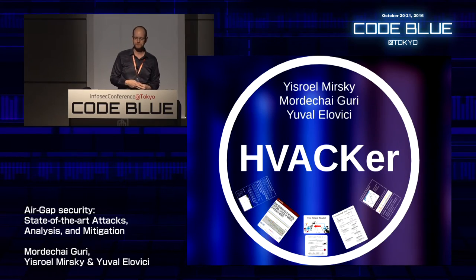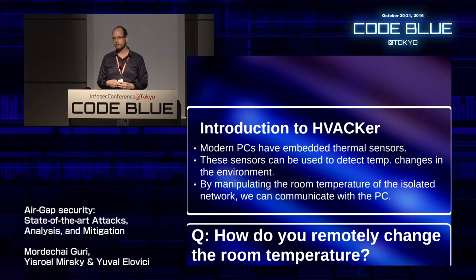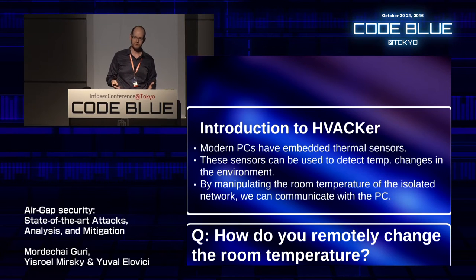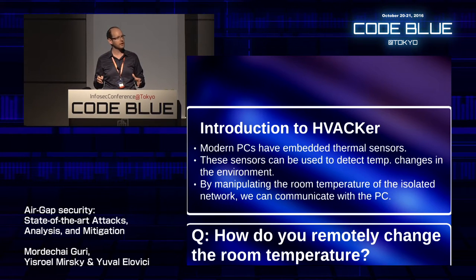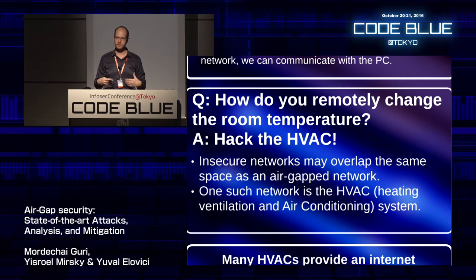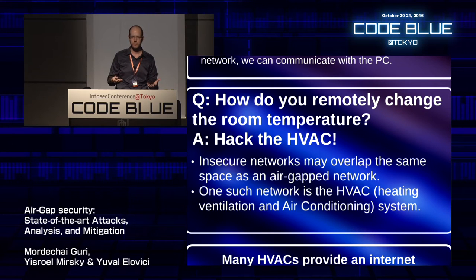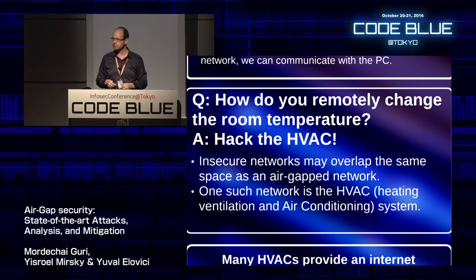The first thermal channel is called HVACR. Modern computers have thermal sensors in the CPU and on the motherboard to regulate temperature and protect against overheating. If we can change the temperature in the room — raise or lower it — the computer can pick up these changes and interpret them as binary information. The question is how an attacker can manipulate room temperature. In many cases, insecure networks overlap in the same physical space as private protected networks — for example, the HVAC system.